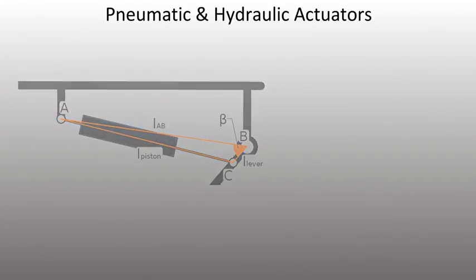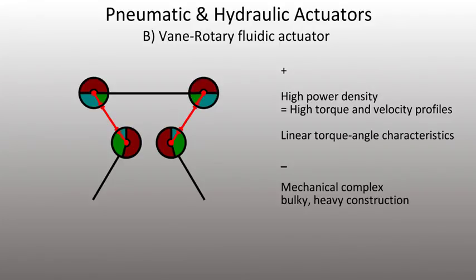As another option, rotary fluidic actuators have been implemented for legged robots by inserting vane type actuators into the joints. These rotary fluidic actuators combine the advantage of high power output with a linear torque angle characteristic.